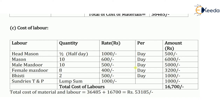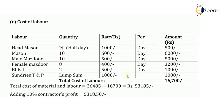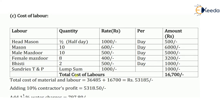For the calculation of amounts for various labors, I multiply quantity by rate. For the head mason: 0.5 into 1000 comes as 500 rupees. For mason: 10 into 600 comes as 6000 rupees. Similarly, you can calculate amounts for all other labors. After adding all labor amounts including sundries, the total cost of labors comes as 16,700 rupees.